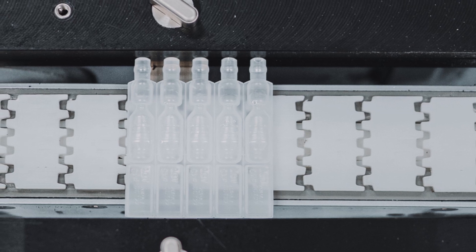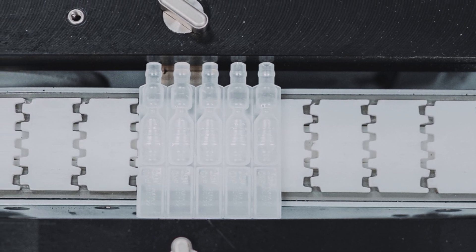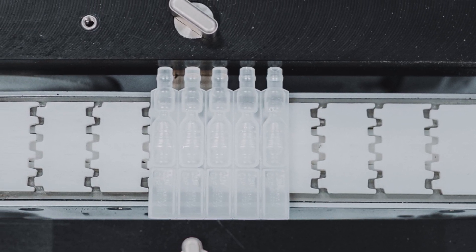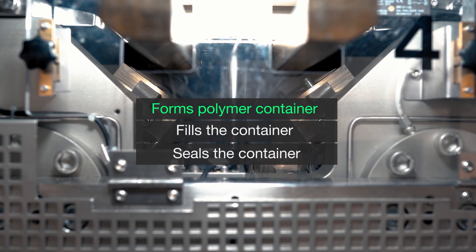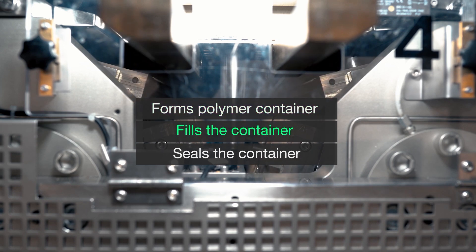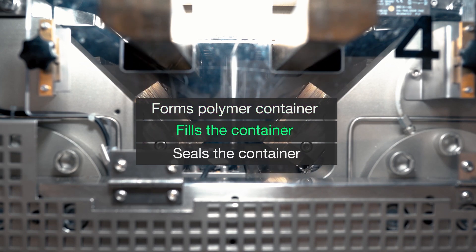The blow-fill-seal liquid packaging process is a series of sequential events all occurring inside a single machine. First the machine forms the polymer container, then the same machine fills the container with the sterile liquid, followed immediately